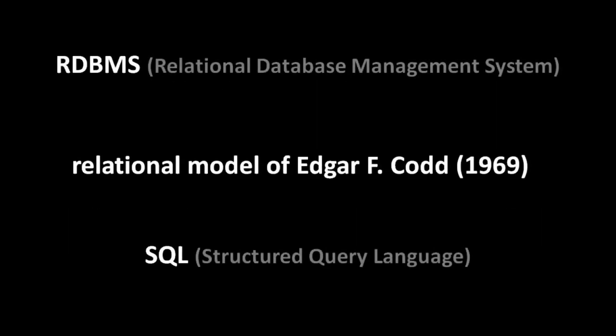In this unit, we're going to specifically learn about relational databases. Relational refers to the relational model of data, devised by Edgar F. Codd in about 1969. The relational model is one of a few alternatives - there's the hierarchical model, a network model, an object model - but the relational model is by far the most dominant. The term RDBMS stands for Relational Database Management System, referring to the software itself.